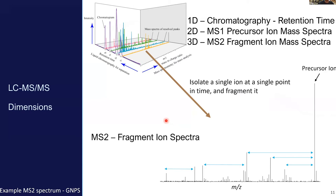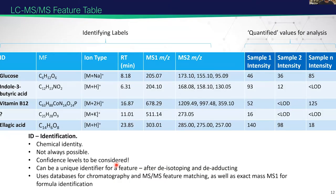In LC-MS/MS, at each time point we record a mass spectrum, then look for the most intense features, isolate them, fragment them, and get an additional mass spectrum showing a precursor ion and a series of fragment ions. The output of an LC-MS/MS run is a feature table with several columns, which I'll quickly run through before discussing how you analyze the data to get these.